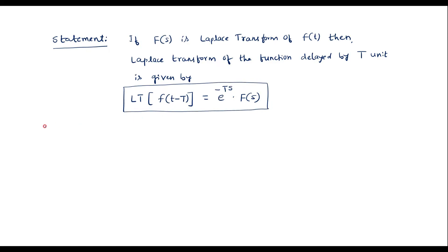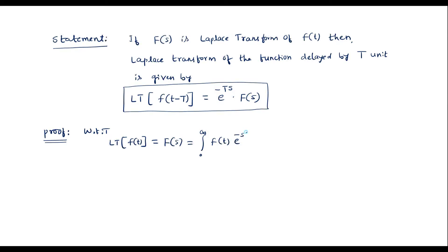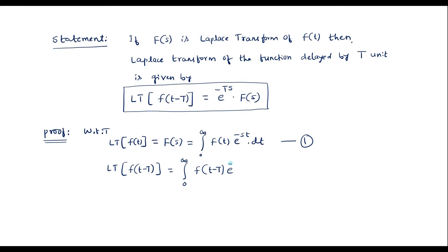We will now prove this theorem. We know that the Laplace transform of any signal f of t is F of s, given by the integral from 0 to infinity of f of t · e to the power minus st · dt. We will call this equation 1. Now let us consider the shifted function — the Laplace transform of f of t minus T — which equals the integral from 0 to infinity of f of t minus T · e to the power minus st · dt.